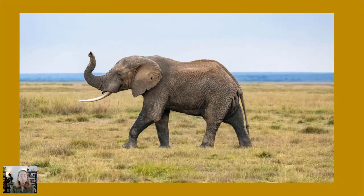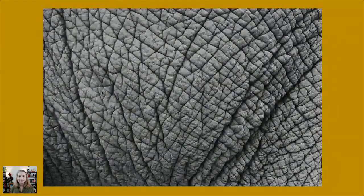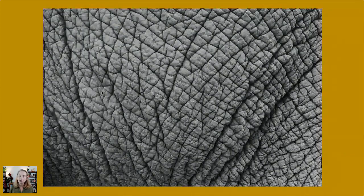They can throw water over their bodies and throw dust over themselves to keep cool. Of course they use the trunk for touch and communication, and even as a snorkel when swimming. Looking overall at their skin, they have lots of wrinkles — the African elephant has more than the Asian — and they don't have much hair on their bodies.